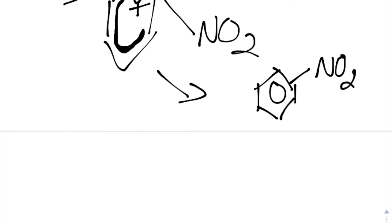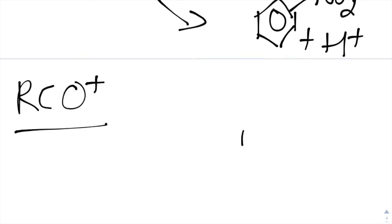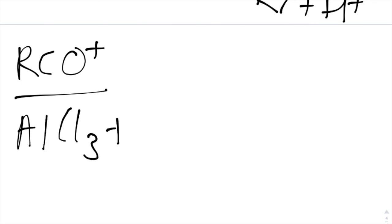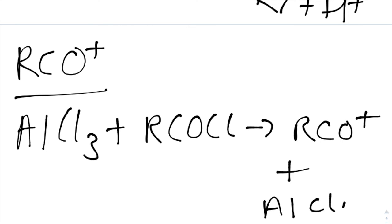You do the same for your RCO+, and obviously this bond is formed to the carbon. To form this, what you need is AlCl3 plus the acyl chloride. You have your R group, this can be anything. This is the acyl chloride, and this goes to RCO+ and then plus AlCl4 minus.